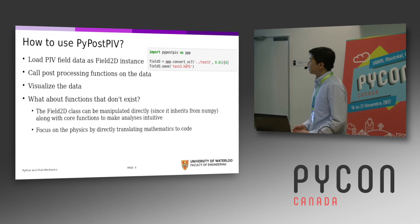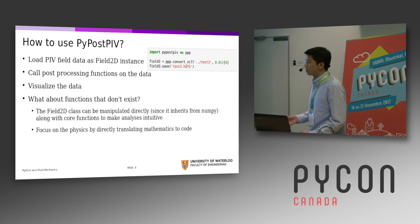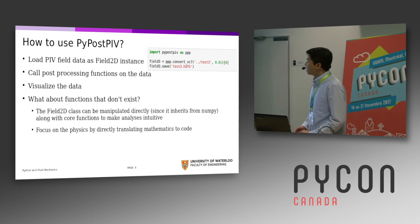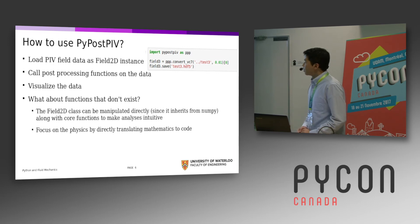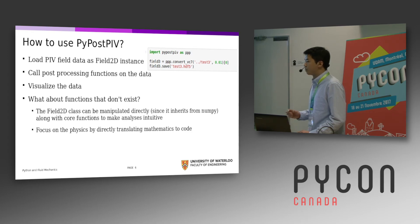How do you use this package, pypostpiv? It's really simple. You start by loading PIV field data — usually this comes from proprietary software like DaVis — and you load this into a Field2D instance. Then you just call whatever post-processing functions you want on that. The real benefit of this package is that for functions that don't exist, you can use the Field2D instance as a programming primitive, kind of like NumPy arrays, to directly translate your mathematical analyses into code.